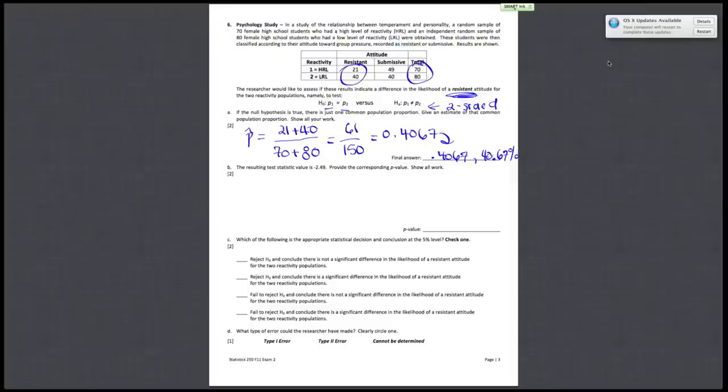Provide the corresponding P-value, show all work. So in this case, since 150 times your common population proportion is greater than or equal to 10, and 150 times 1 minus 0.4067 is also greater than or equal to 10, your test statistic value would be your Z-value.